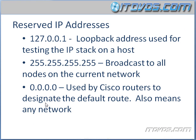There are some reserved IP addresses that we cannot use. The first one is 127.0.0.1, and this is actually a really important IP address to memorize because we use it a lot in the real world. This is called a loopback address and it's used for testing the IP stack on a host.